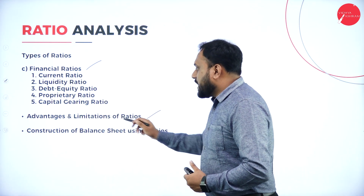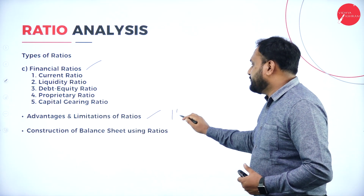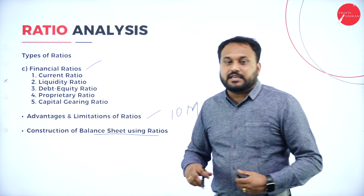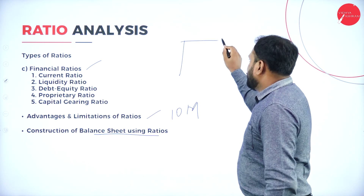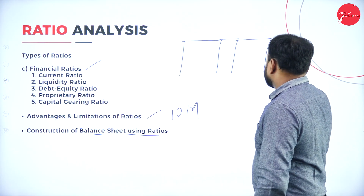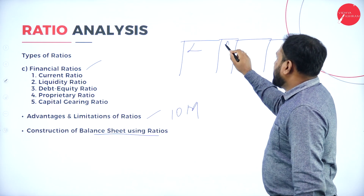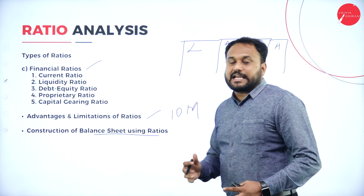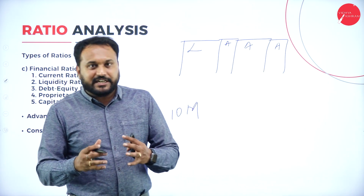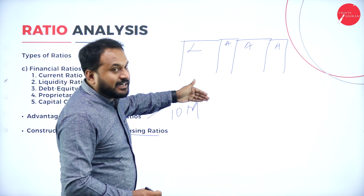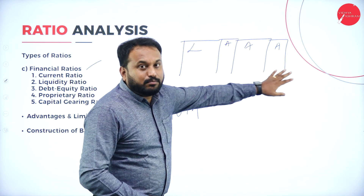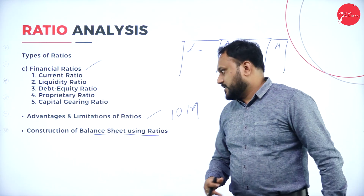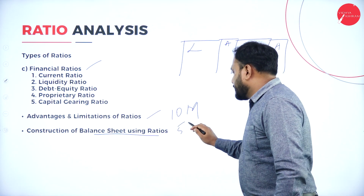You may also get a question on Advantages and Limitations of ratio for 10 marks. Another question type is Construction of Balance Sheet using ratios — where you have the liability side and the asset side, and you calculate each term so that both sides tally. From the ratios you are supposed to construct balance sheets. These are like 5-mark questions.